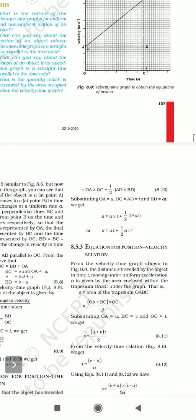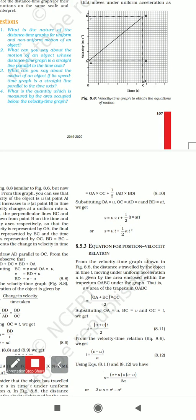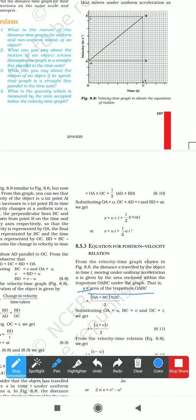For the third equation of motion, we use the second method: applying the trapezium area formula directly. From the velocity-time graph, the distance traveled by the object in time t under uniform acceleration a is given by the area enclosed within trapezium OABC.